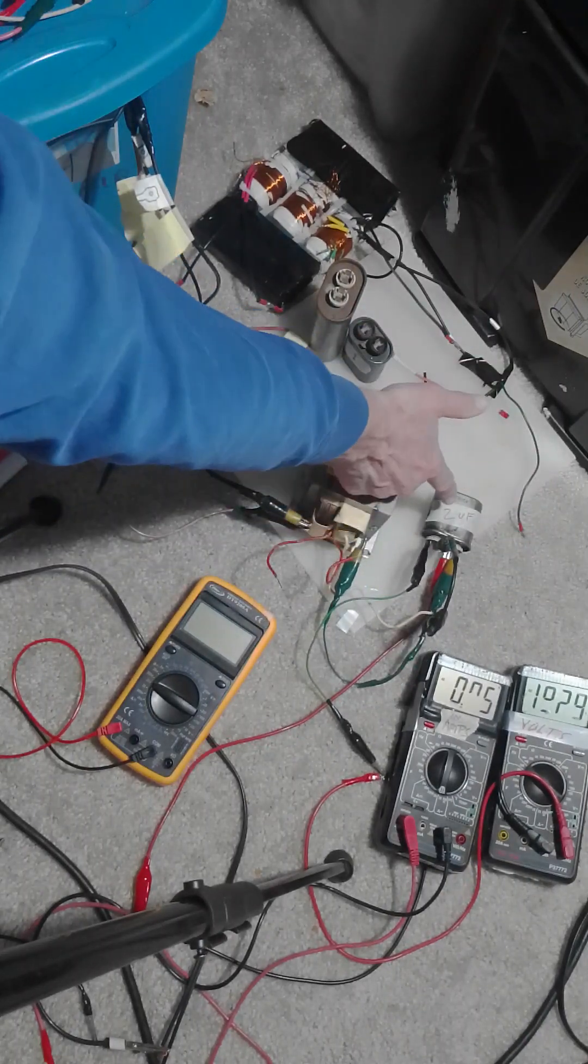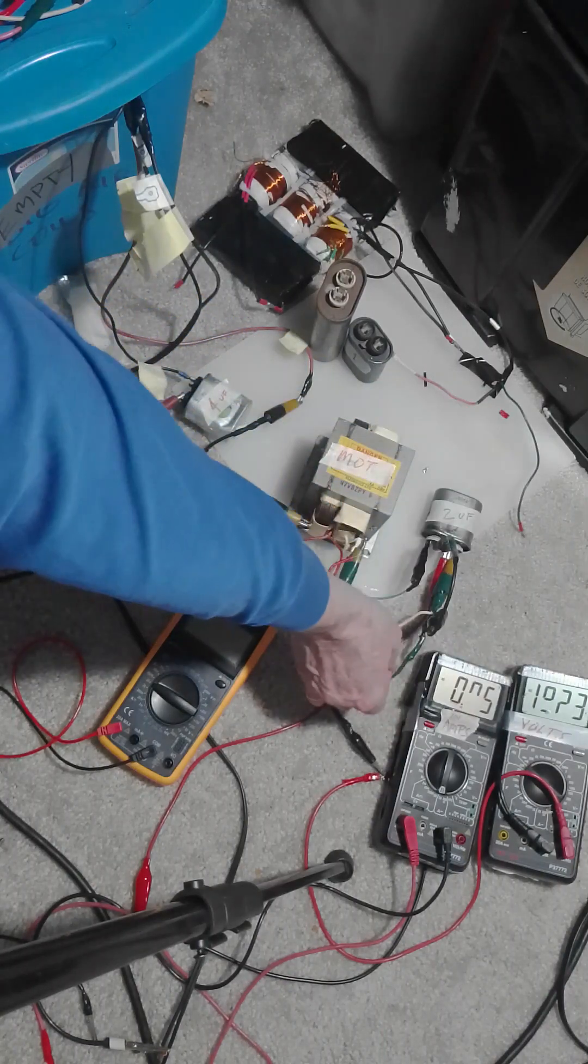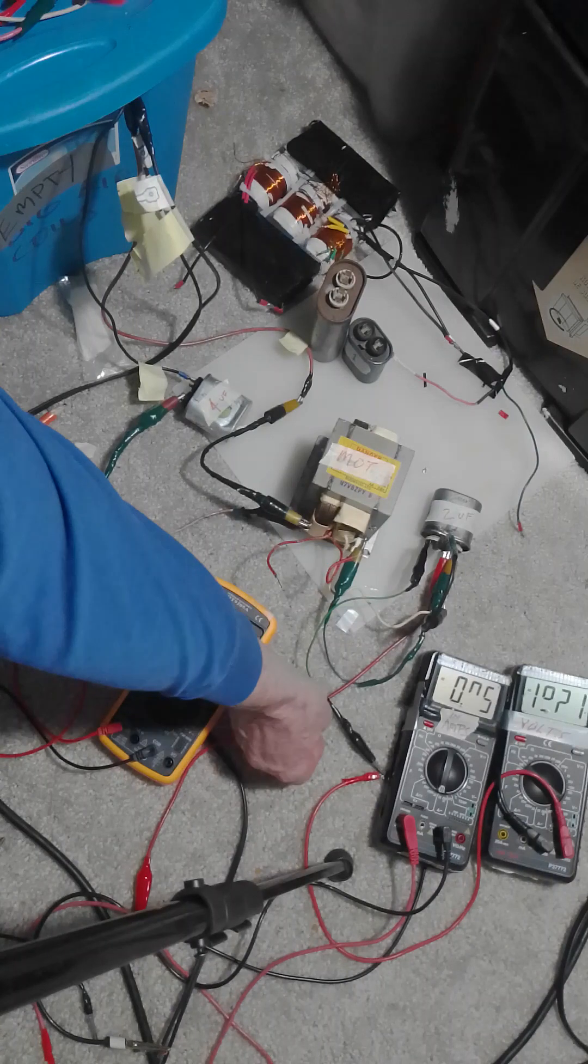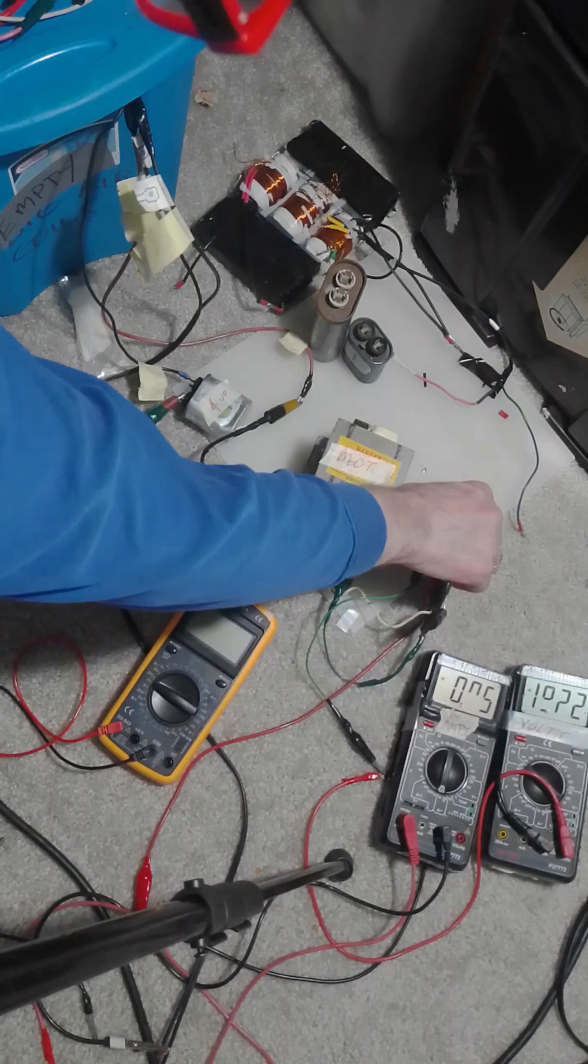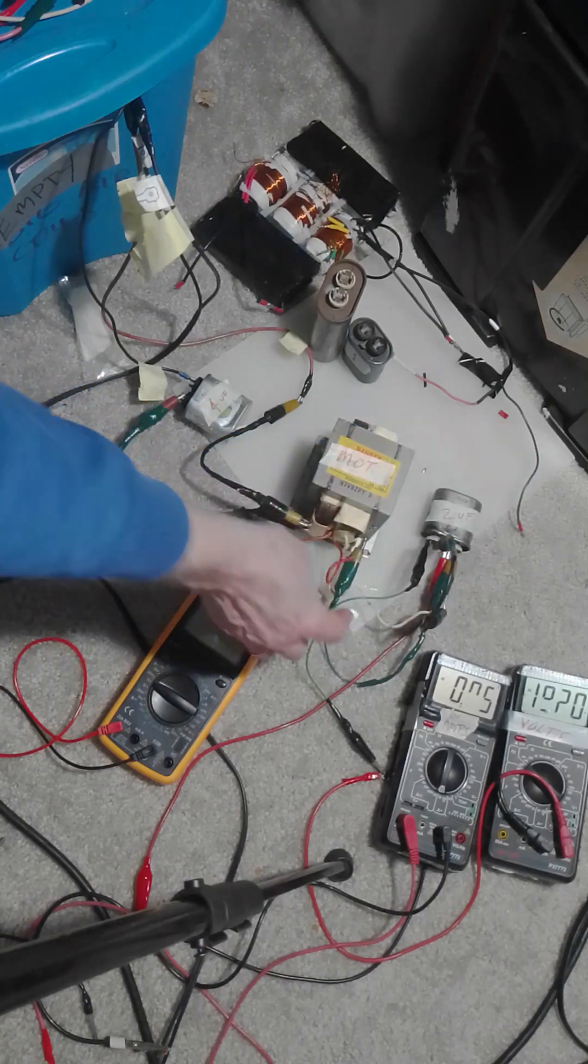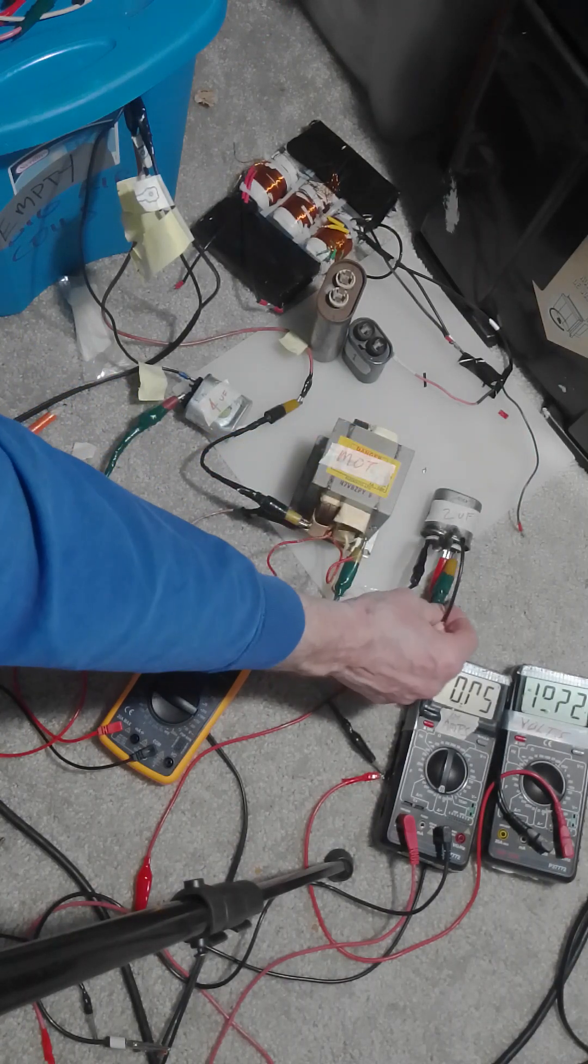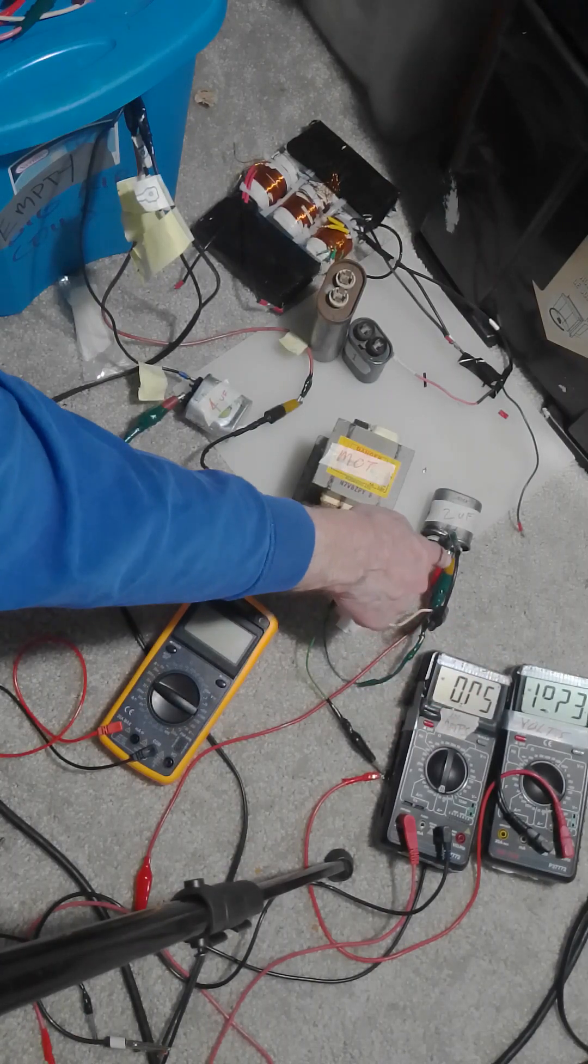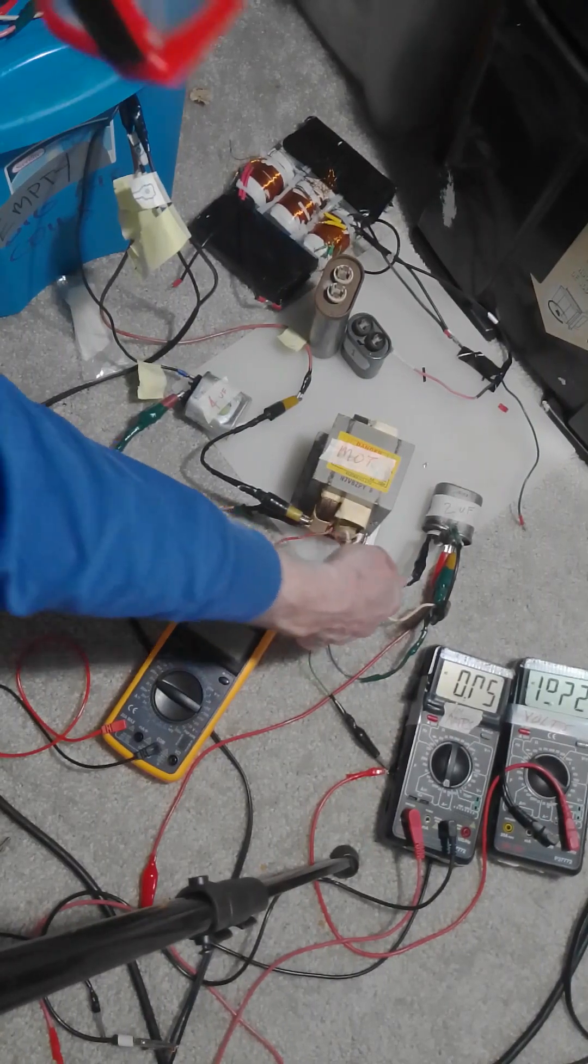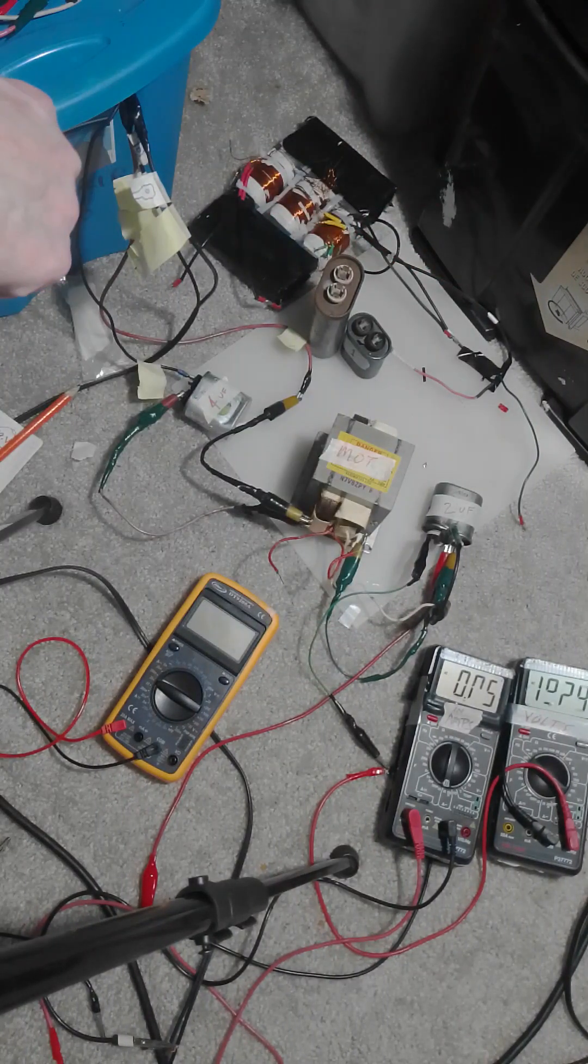This is the 2UF run resonating cap or whatever you want to call it. And there's a high voltage line here, the white wire to this black wire. This is one side of the cap. This yellow and green wire here is the other high voltage side of the transformer.